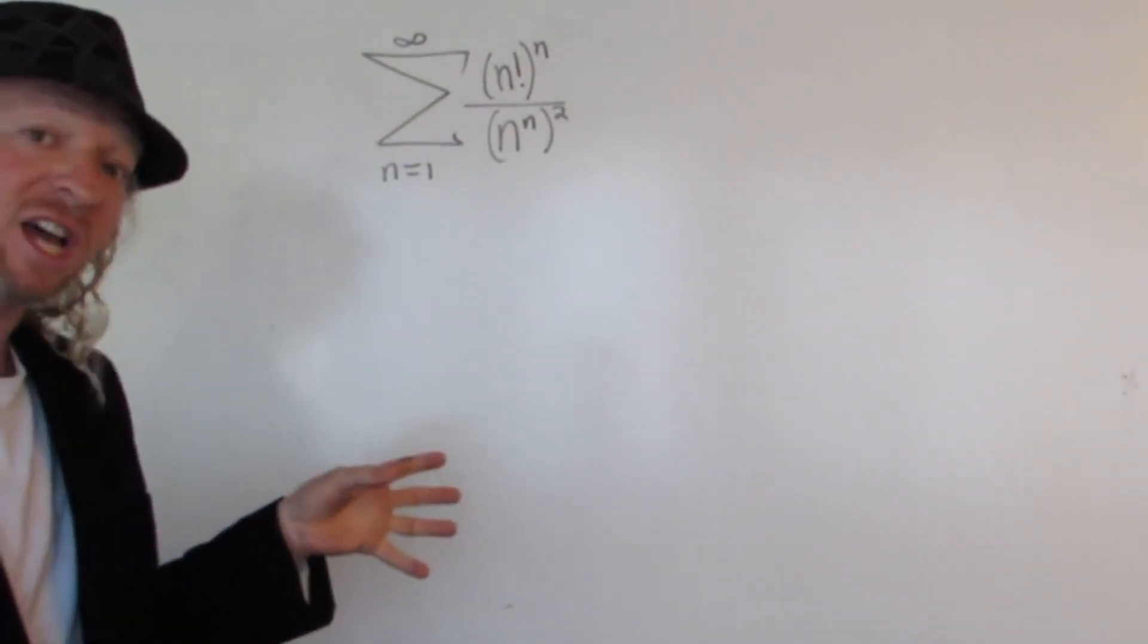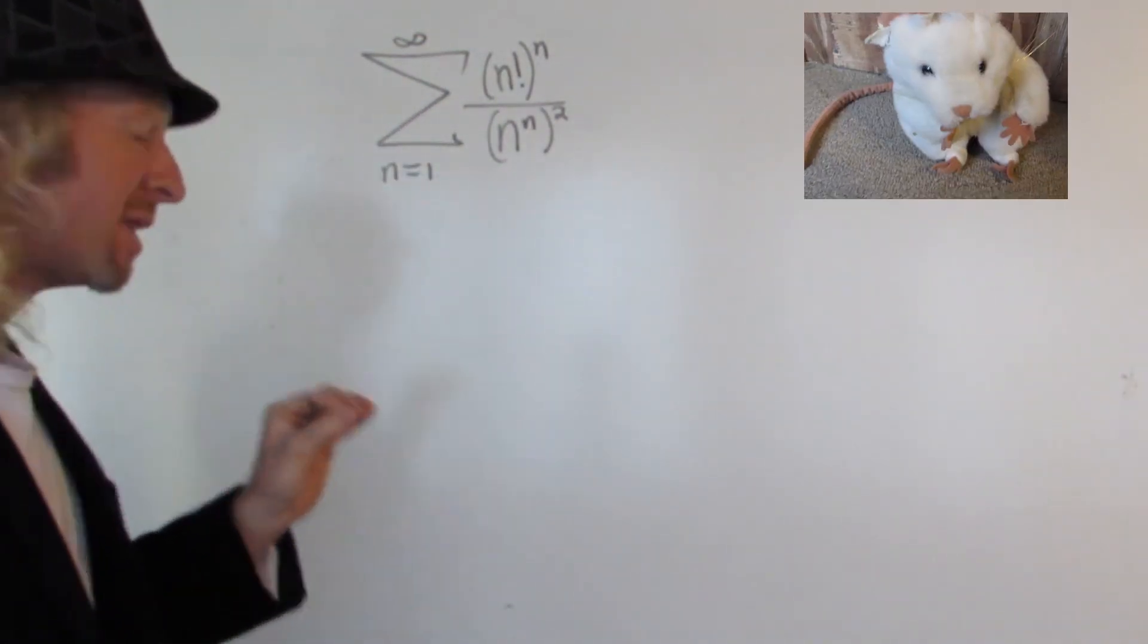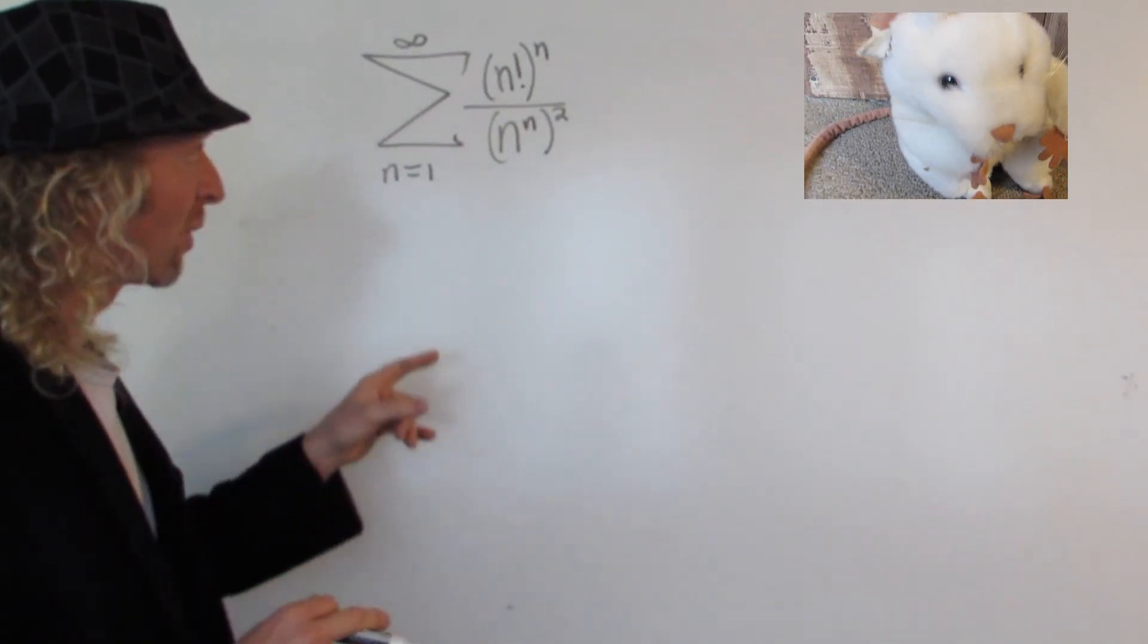With this problem you have to figure out if this infinite sum converges or diverges. So the first thing you want to do with a problem like this is basically think about it. What can you do to rewrite this?